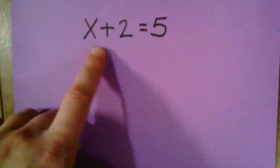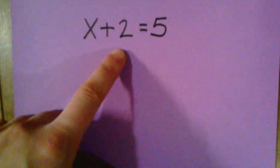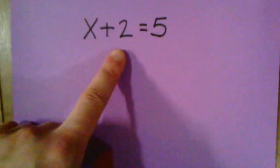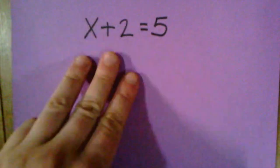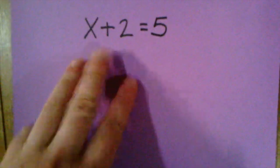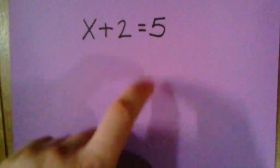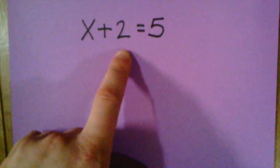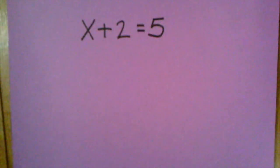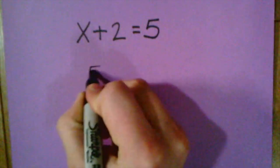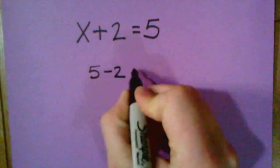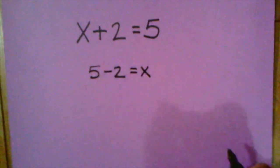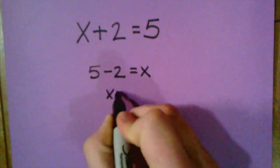Some of us might have started with the number two and added by counting up to get to five: two, three, four, five, I needed to add three. Others of us might have taken five and subtracted two to figure out what X would need to equal. The second method is actually what we call using an inverse operation. We took five and we subtracted two to figure out what X was supposed to be, and then we knew that X would equal three.